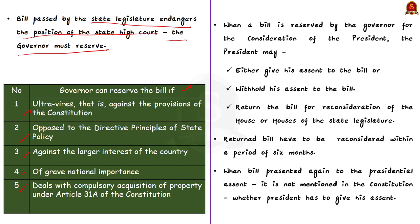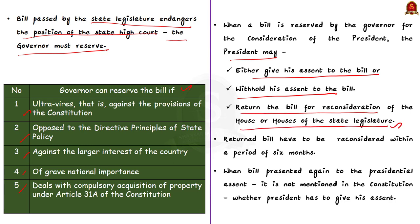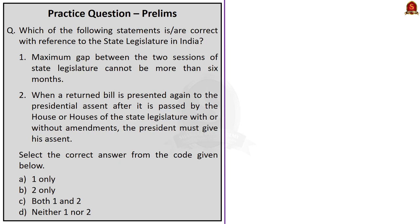When the bill is reserved by the Governor for the consideration of the President, the President may give assent, withhold assent, or return the bill for reconsideration of the house or houses of the state legislature. When returned, the house or houses have to reconsider it within six months and present it again to the President. It is not mentioned in the constitution whether it is obligatory for the President to give assent to such a bill. Since Tamil Nadu Assembly has passed the same bill again, the Governor cannot reject it a second time — he must give assent or reserve it for the President.